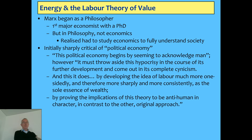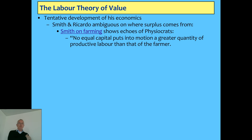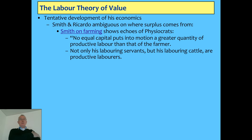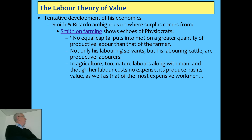When you look at where Smith and Ricardo spoke about where surplus comes from, Smith on farming does show some elements left over from the physiocrats. He says no equal capital puts into motion a greater quantity of productive labor than that of the farmer — not only his laboring servants but his laboring cattle, the productive laborers. From an energy basis, that's true: you can use the animals to get at the free energy. And then he says: nature labors along with man, but its labor costs no expense. That's the same thing the physiocrats were saying.